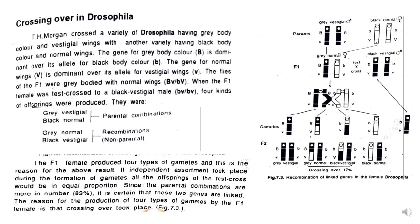T.H. Morgan crossed a variety of Drosophila having grey body and vestigial wings with another variety having black body and normal wings. The gene for grey body is capital B, dominant over small b for black body. The gene for normal wings is capital V, dominant over small v for vestigial wings. The F1 flies obtained after this cross were all grey-bodied with normal wings because they were heterozygous — capital B small b, capital V small v.